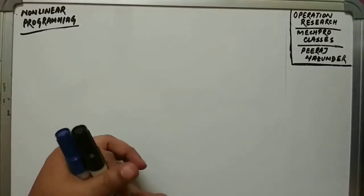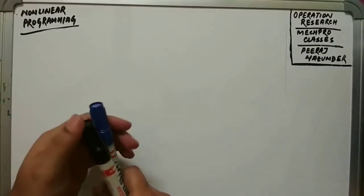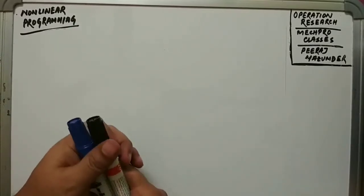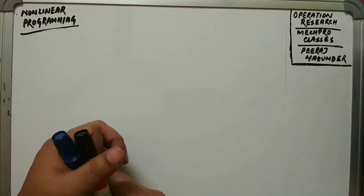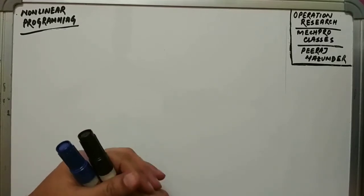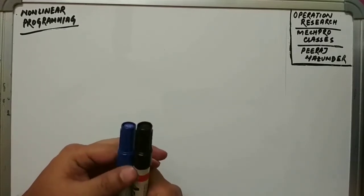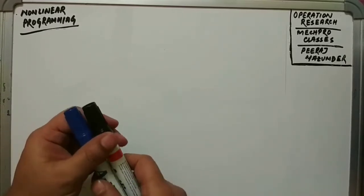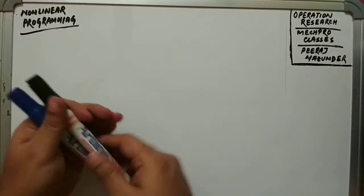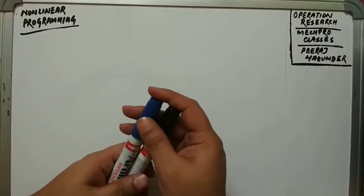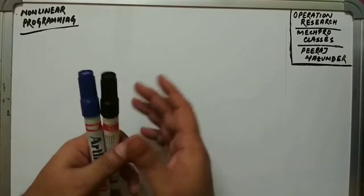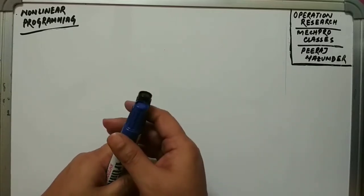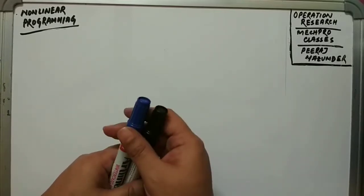Welcome students to our next video session of Nonlinear Programming, Module 7 of Operations Research. Previously in the first video, we learned about the background of optimization, introduction to nonlinear programming, and some basic terms relating to nonlinear programming. We also saw different graphical representations of constrained as well as unconstrained nonlinear programming.